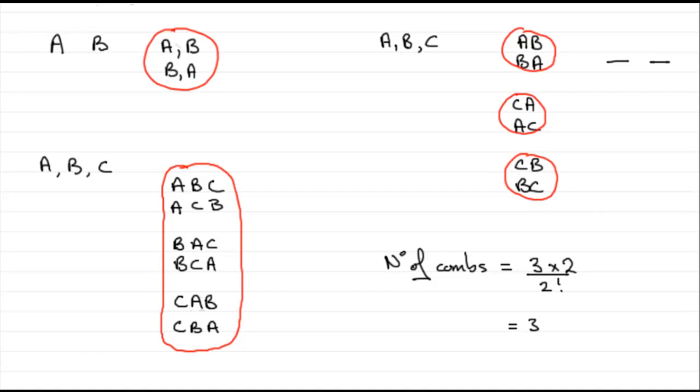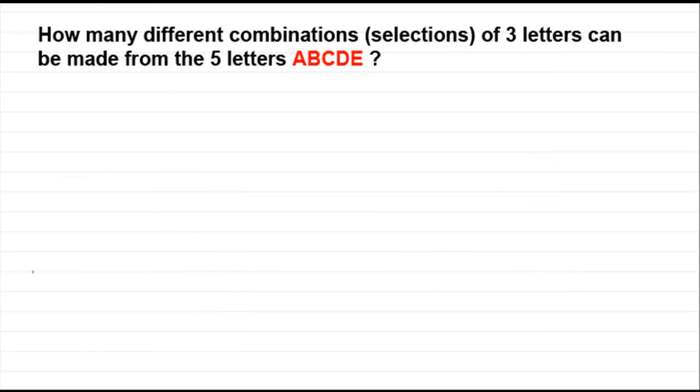Now we can extend this then to harder questions. And we've got one here. How many different combinations, selections of three letters can be made from the five letters A, B, C, D, E?